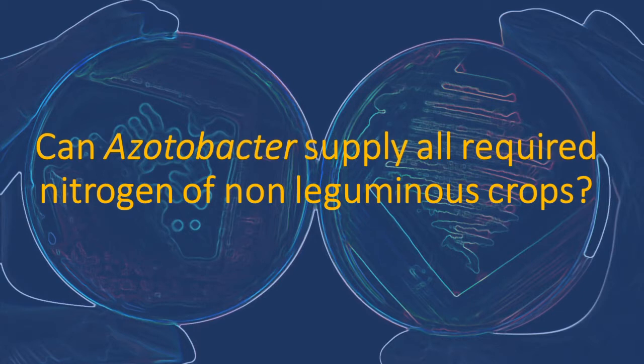An important question is whether Acetobacter can supply all the nitrogen required by the crop plant — and the answer is no. It cannot supply all the required nitrogen. It just leads to an increase of 8 to 10 percent in the wheat crop, and we still need extra nitrogen supplied as chemical fertilizer.